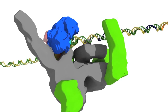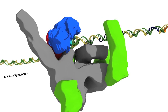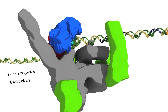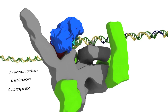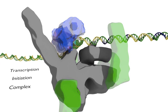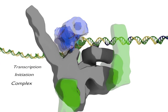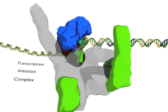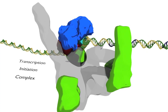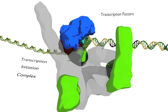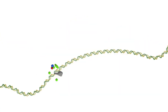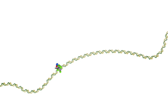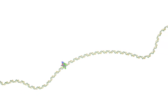This complex is called the transcription initiation complex and contains the RNA polymerase II enzyme, along with additional proteins or protein complexes known as transcription factors. Transcription factors help RNA polymerase to locate the promoter and initiate transcription.